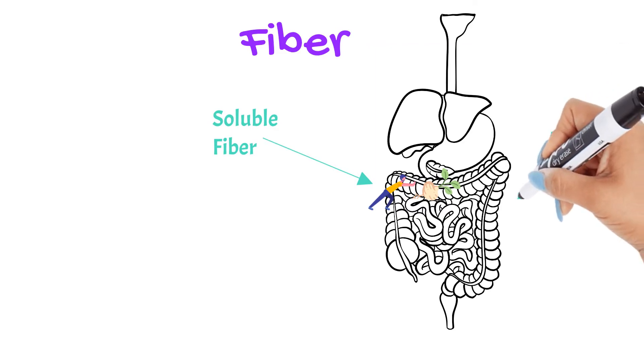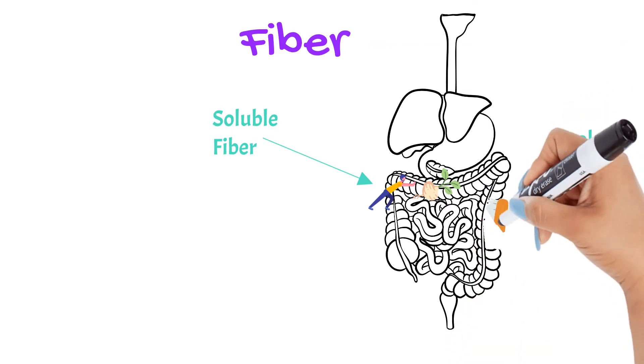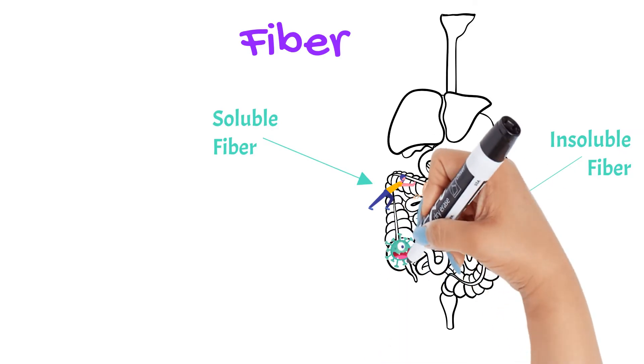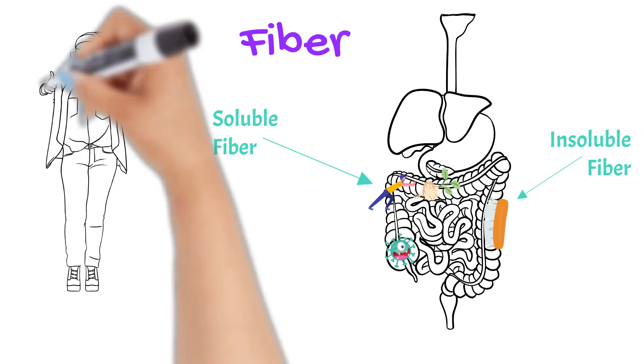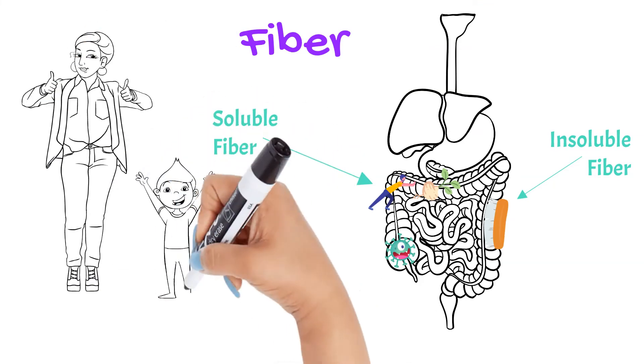Insoluble fiber can't be digested, so it scrubs our insides as it works its way through. This keeps bits of food from getting stuck in any nooks and crannies, and it also keeps our good bacteria happy and healthy as their primary source of food. For children, the fiber intake goal is age plus five grams.